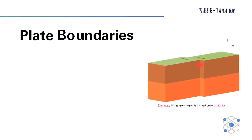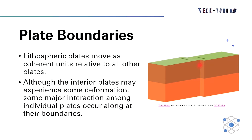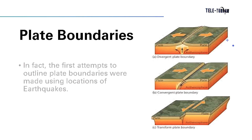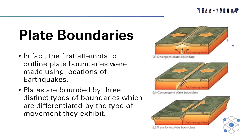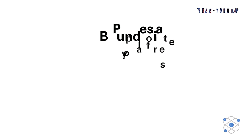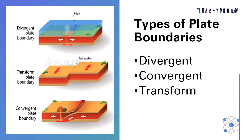Let us have one part of plate tectonics, and that is plate boundaries. Lithospheric plates move as coherent units relative to all other plates. Although the interior of plates may experience some deformation, major interactions among individual plates occur along their boundaries. In fact, the first attempts to outline plate boundaries were made using locations of earthquakes. Plates are bounded by three distinct types of boundaries, which are differentiated by the types of movement they exhibit: divergent plate boundaries, convergent plate boundaries, and transform plate boundaries.